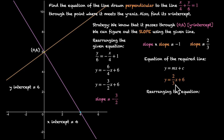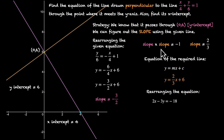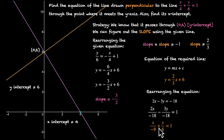Now let's write this in intercept form. Dividing both sides by minus 18: 2x over minus 18 minus 3y over minus 18 equals 1, which simplifies to x over minus 9 plus y over 6 equals 1. Just by looking at this equation, we can figure out that the x intercept is minus 9 and the y intercept is 6, which we knew from the beginning.